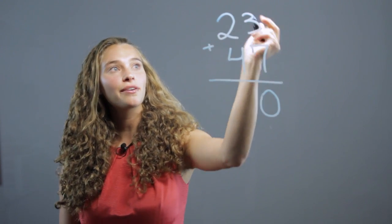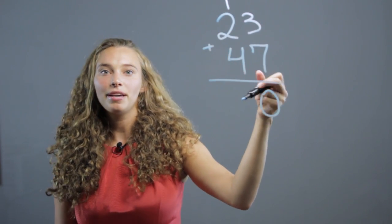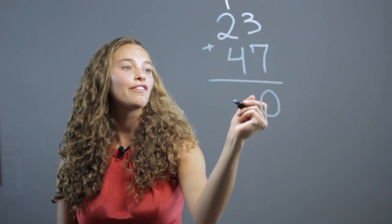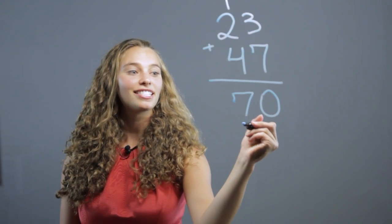Then we have to carry the one over, so make sure they know how to carry. And then we have two and four make six, plus the one we carried over makes seven, so we get seventy.